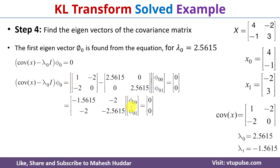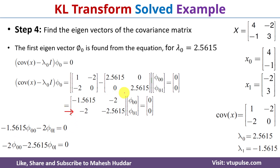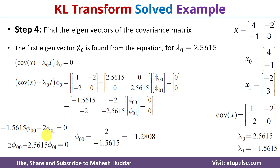Performing the matrix multiplication, we get the equation: -1.5615·φ00 - 2·φ01 = 0. Using this first equation to solve for φ00, we get φ00 = 2·φ01 / (-1.5615). Assuming φ01 = 1, we get φ00 = -1.2808. So the first eigenvector φ0 equals [-1.2808, 1].